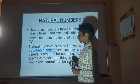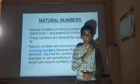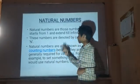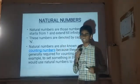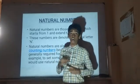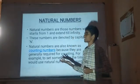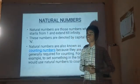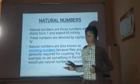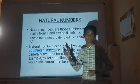Natural Numbers are those numbers which start from 1 and extend till infinity. These numbers are denoted by the capital N. They are also called Counting Numbers because they are used in counting — for example, counting how many chocolates are in a box: 1, 2, 3, 4 — because counting starts from 1.